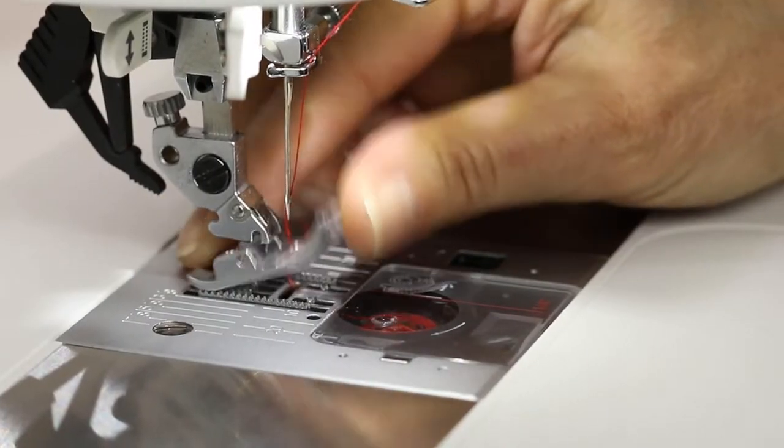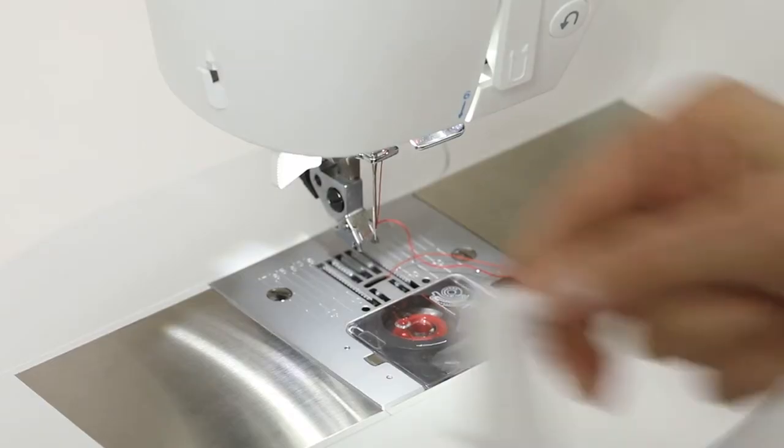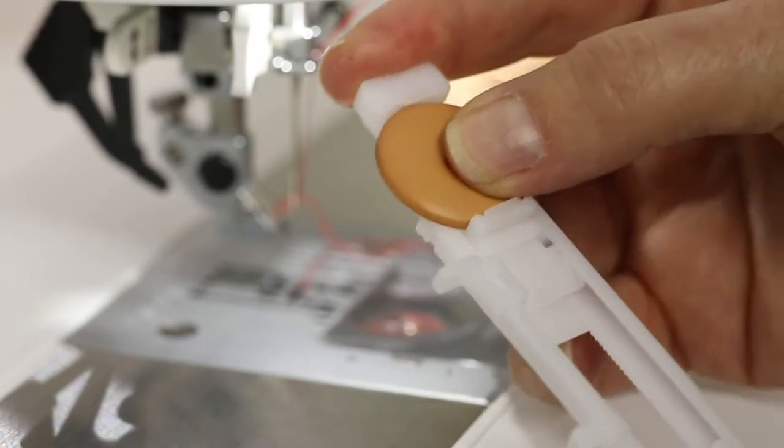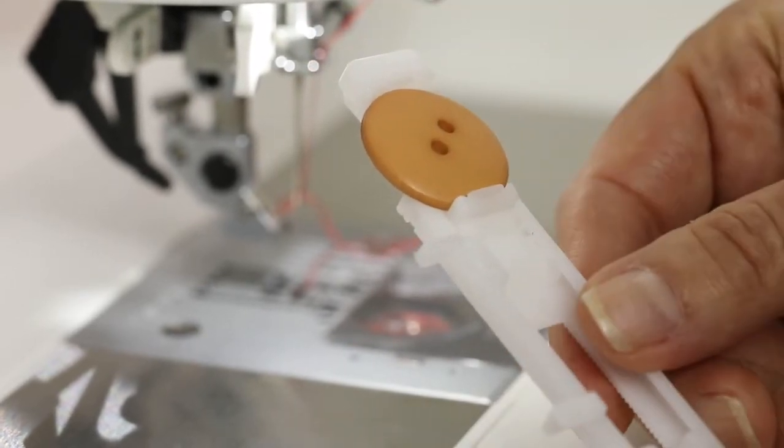Remove the foot that's already on the machine, open the back of the foot, set your button in the slide at the back, and close it to secure the button in place.